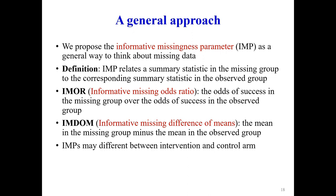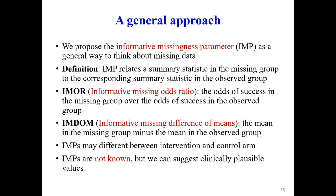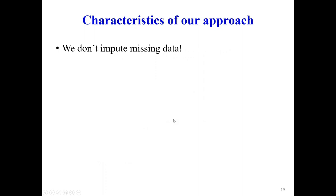Bear in mind that you can have different parameters for different arms — for example, a different parameter for the haloperidol arm and a different one for the placebo arm. These parameters are not known. We can suggest clinically plausible values using expert opinion, or we can make a sensitivity analysis to see how robust results are to different IMPs.